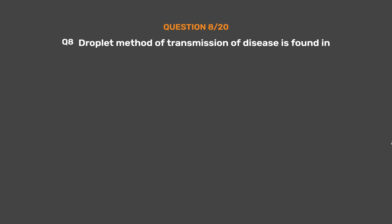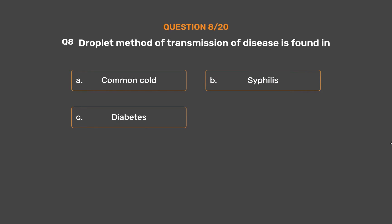Question number 8. Droplet method of transmission of disease is found in: Option A: Common cold. Option B: Syphilis. Option C: Diabetes. Option D: Typhoid.